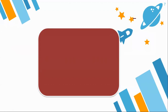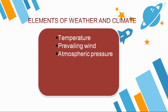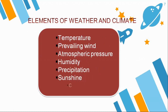Let us learn about the elements of weather and climate. What are the elements of weather or climate? Firstly we have got temperature, secondly prevailing wind, atmospheric pressure, humidity, precipitation, sunshine, and lastly your clouds. So these are the elements of weather and climate.